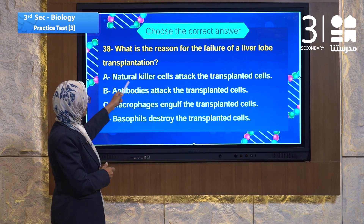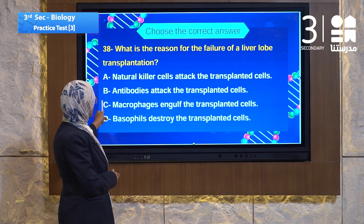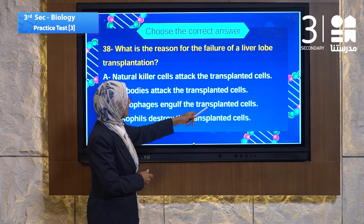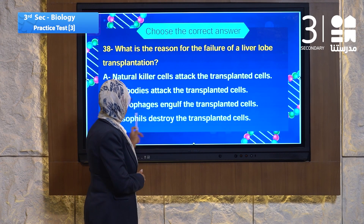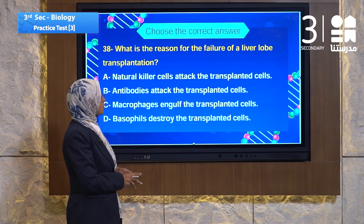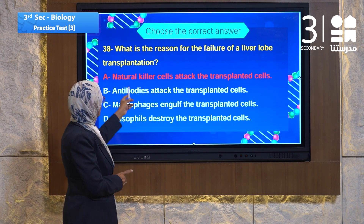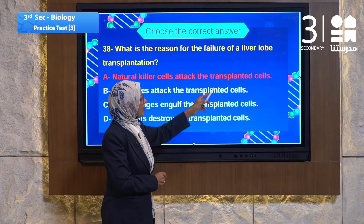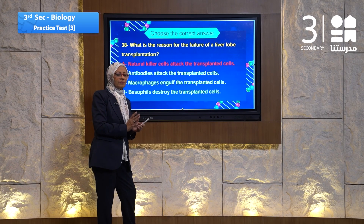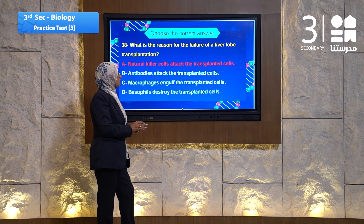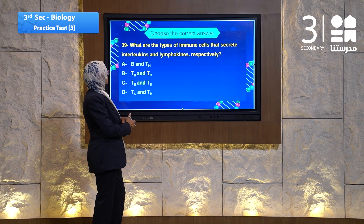The choices are: A, natural killer cells attack the transplanted cells; B, antibodies attack the transplanted cell; C, macrophages block and engulf the transplanted cells; D, nuclear signal from the transplanted cell. The answer must be number A — natural killer cells attack the transplanted cells, causing the transplant to fail and be rejected inside the human body.